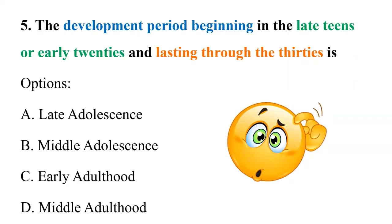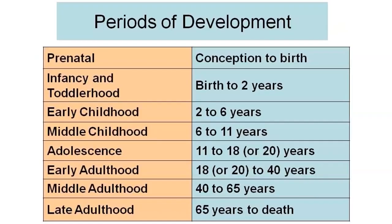Question five: The developmental period that begins in the late teens or early 20s and lasts through the 30s. The given options are: A) late adolescence, B) middle adolescence, C) early adulthood, D) middle adulthood. Let's understand the periods of development.